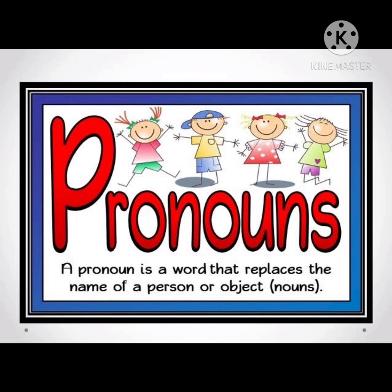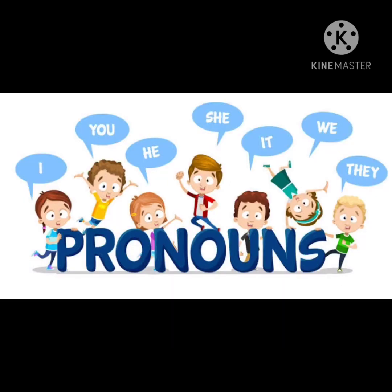The word 'I' is used when a person is talking about himself or herself. The word 'she' is used for a girl or a woman. The word 'he' is used for a boy or a man. Children, the words I, he, she, it are used for one person, one animal, or one thing. When there are more people, more things, more animals, you should use 'we' or 'they.' And if you are talking about someone else, whether one or more, you should use 'you.'